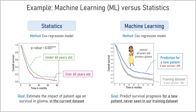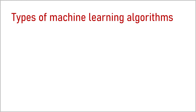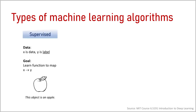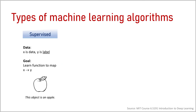Machine learning is particularly interesting in predictive and personalized medicine. Now we know how machine learning works — let's discover some types of machine learning algorithms. We will look at three main classes of problems. The first class is supervised learning. This type contains algorithms for which we have data and corresponding labels. The goal is to map data to labels and to be able to predict labels from data for new samples. For example, an algorithm trained on a large number of images of apples and other fruits will be able to identify that a given object is an apple.